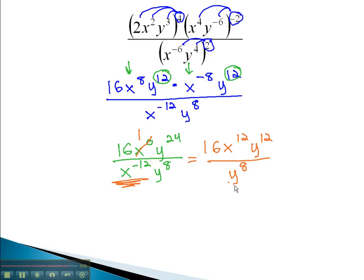To combine the y's together, we will need to subtract their exponents. When we do, we end up with 16x to the 12th, y to the 12th minus 8 is 4, and this becomes our final solution.